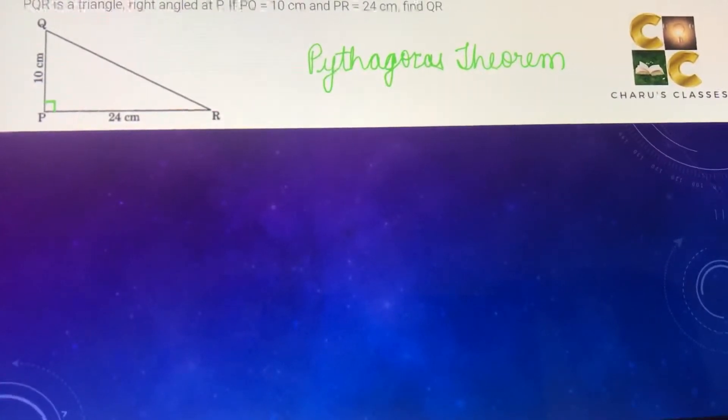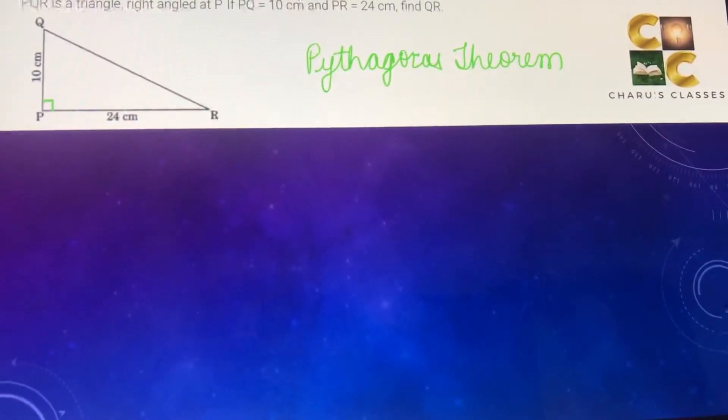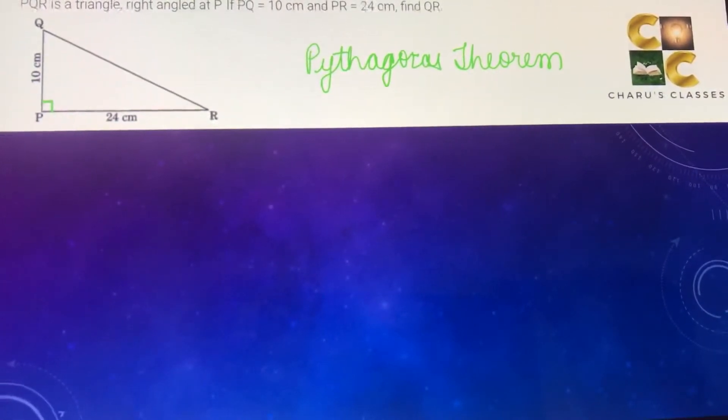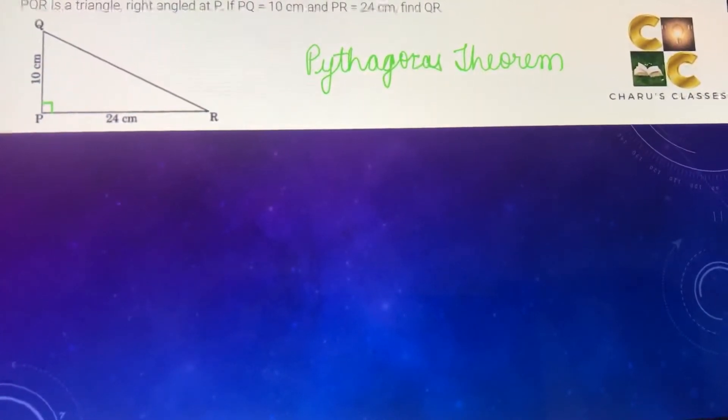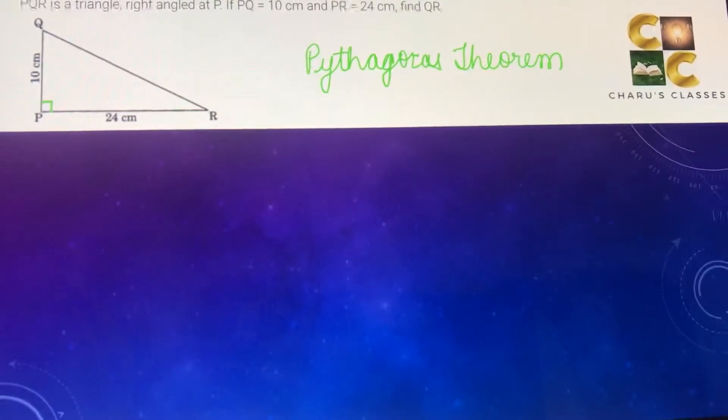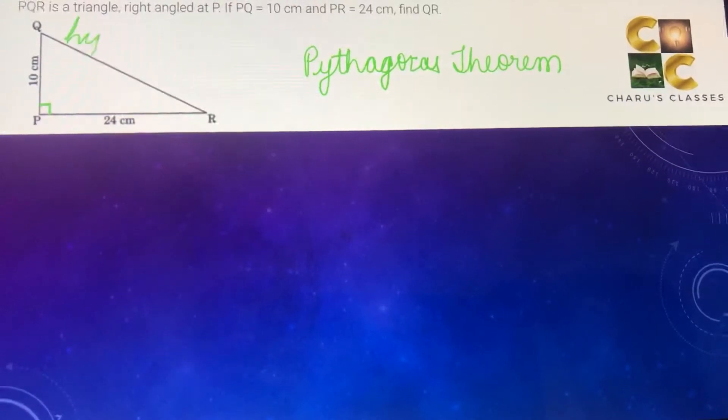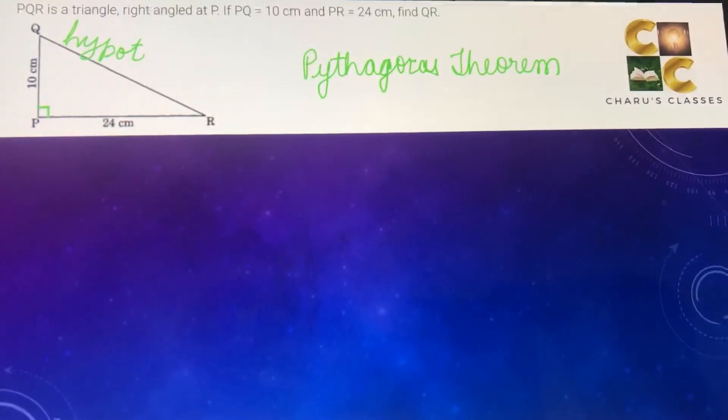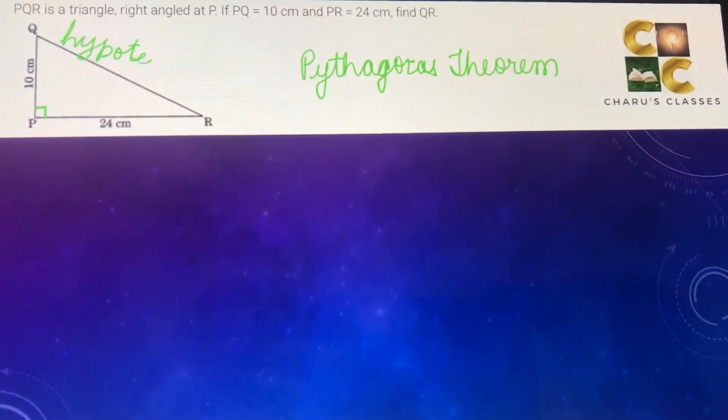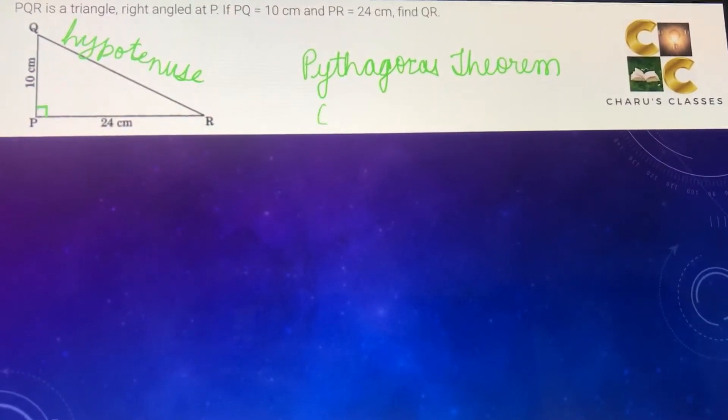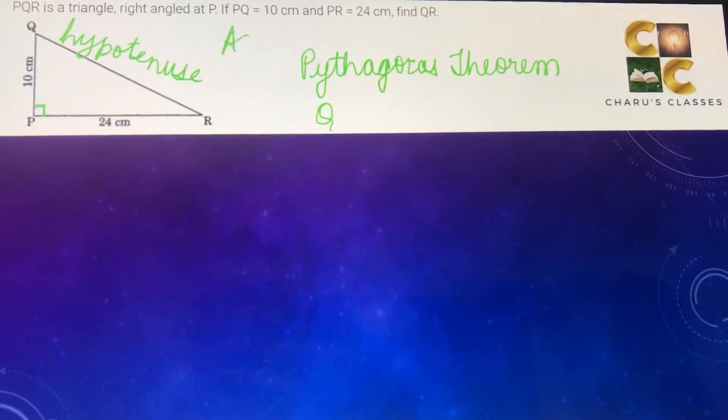According to Pythagoras theorem, the sum of squares of the two sides is always equal to the square of the longest side which is the hypotenuse. Hypotenuse is the longest side which is always opposite to the 90 degree angle. So this particular side is the hypotenuse, so we know that according to Pythagoras theorem.